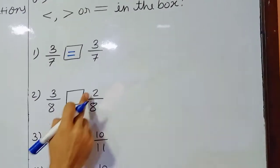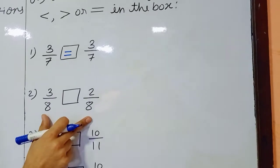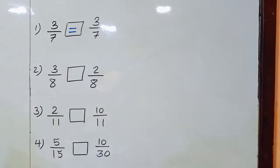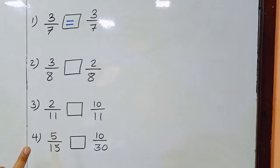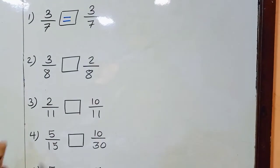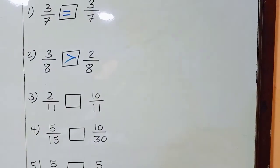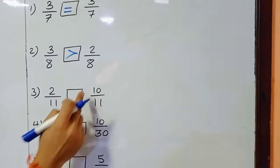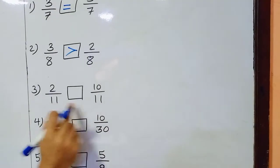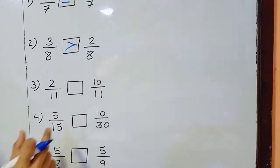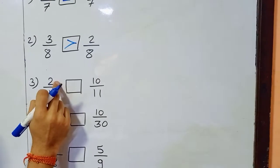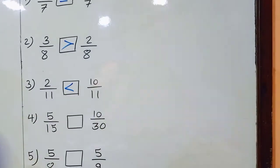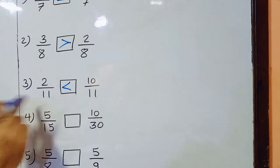3 upon 8 and 2 upon 8. This is the first type of comparison — like fractions. Both denominators are the same, so we decide according to the numerator. 3 and 2 — which one is greater? 3. So 3 upon 8 is the greater fraction. For the third one: 2 upon 11 and 10 upon 11. Again, denominator is the same, so we decide by numerator — 2 and 10, which is greater? 10. So 10 upon 11 is greater than 2 upon 11.